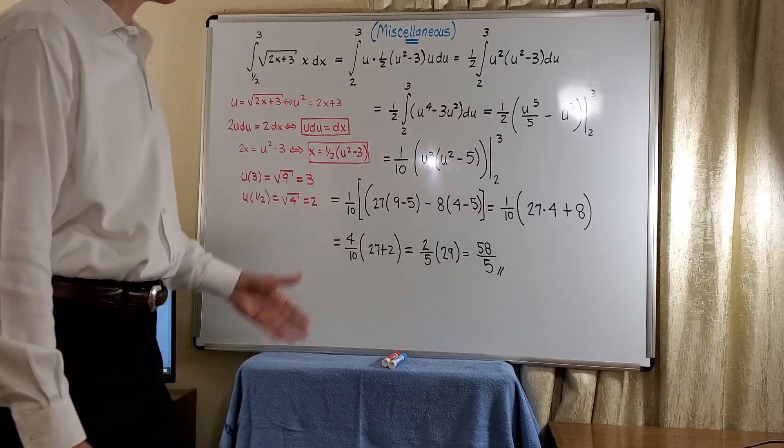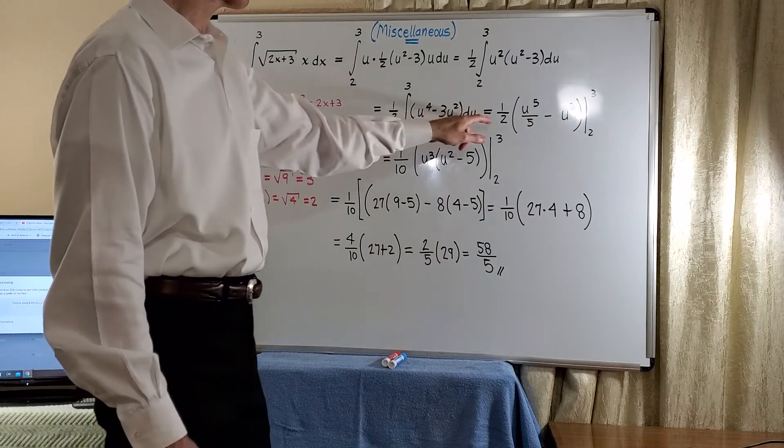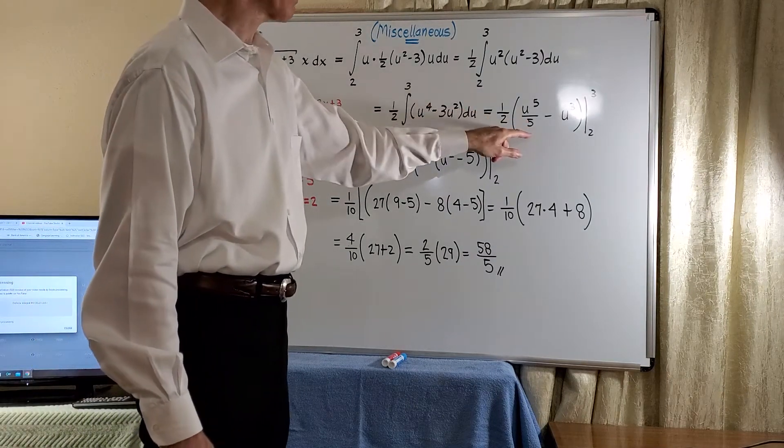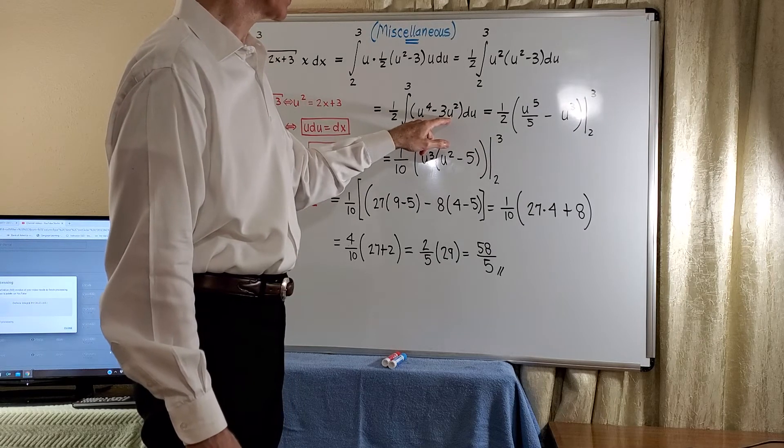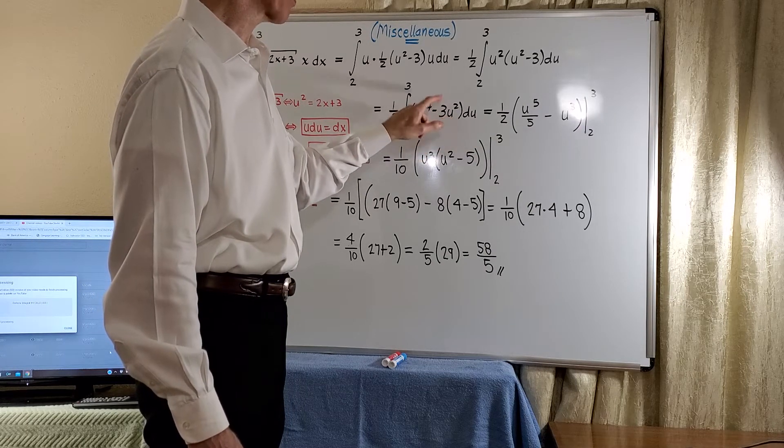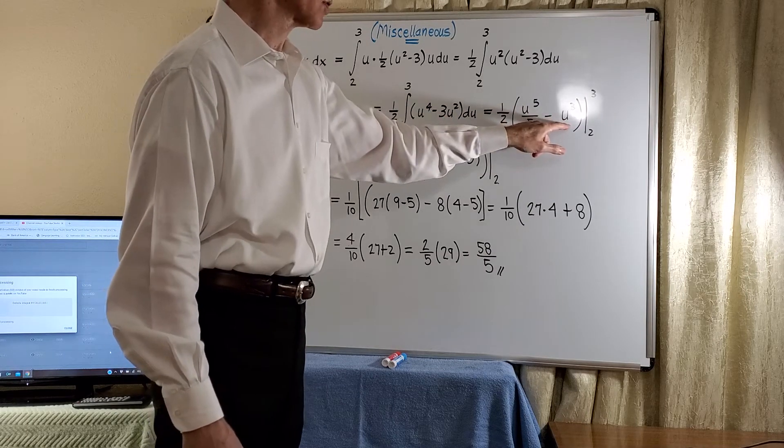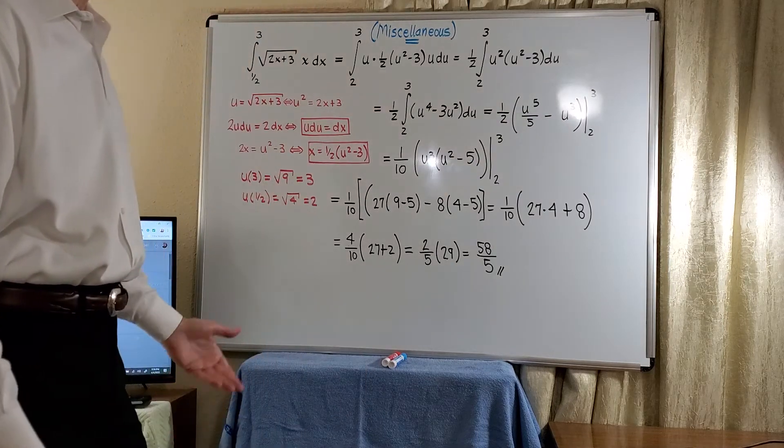Now, add 1 divided by the new power, we'll have the 1/2. And then we'll get u to the 5th divided by 5. And here we get u to the 3rd divided by 3. The 3 is absorbed, leaving us just u to the 3rd.